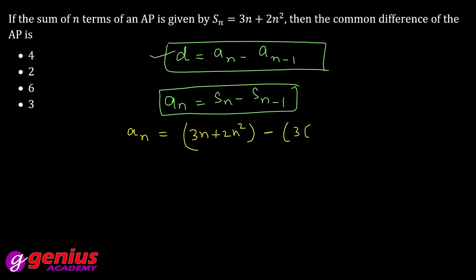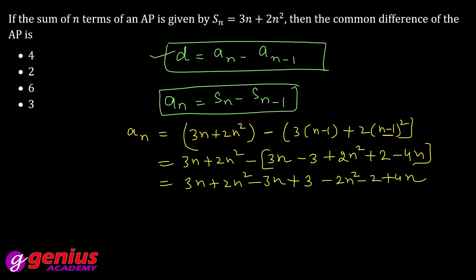Opening this: 3n plus 2n squared minus 3n plus 3 minus 2n squared minus 2 plus 4n. If you simplify, 3n and minus 3n cancel, 2n squared and minus 2n squared cancel. Now what do you have? Minus 3 plus 3 plus 2 minus 2 plus 4n. That means an is equal to 4n plus 1.